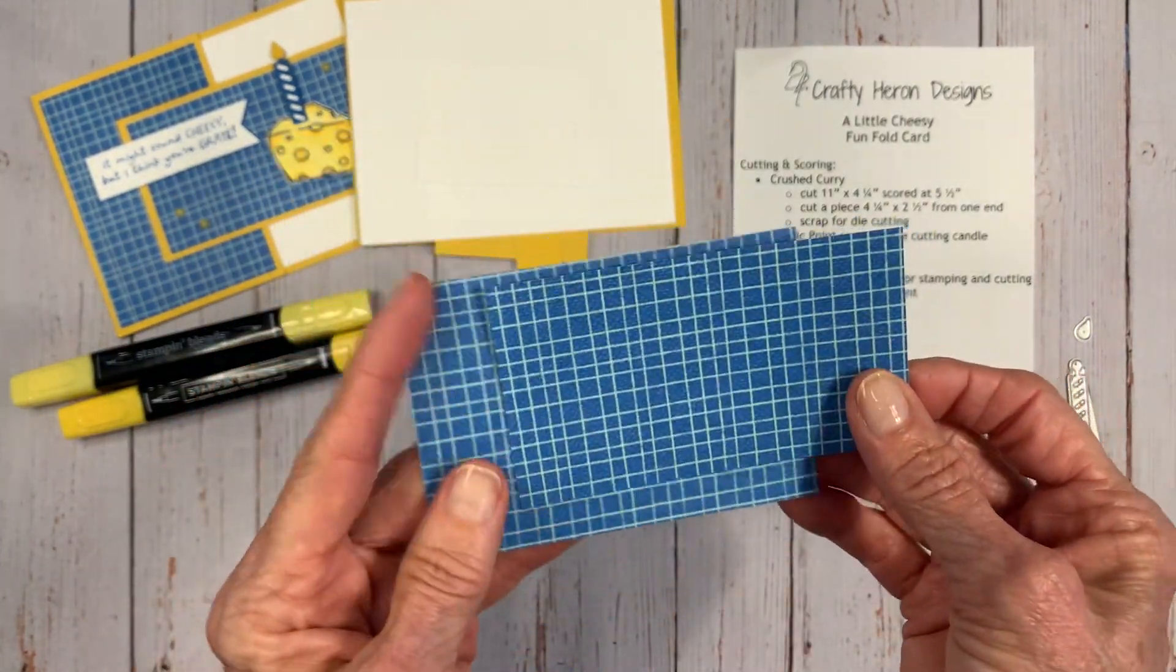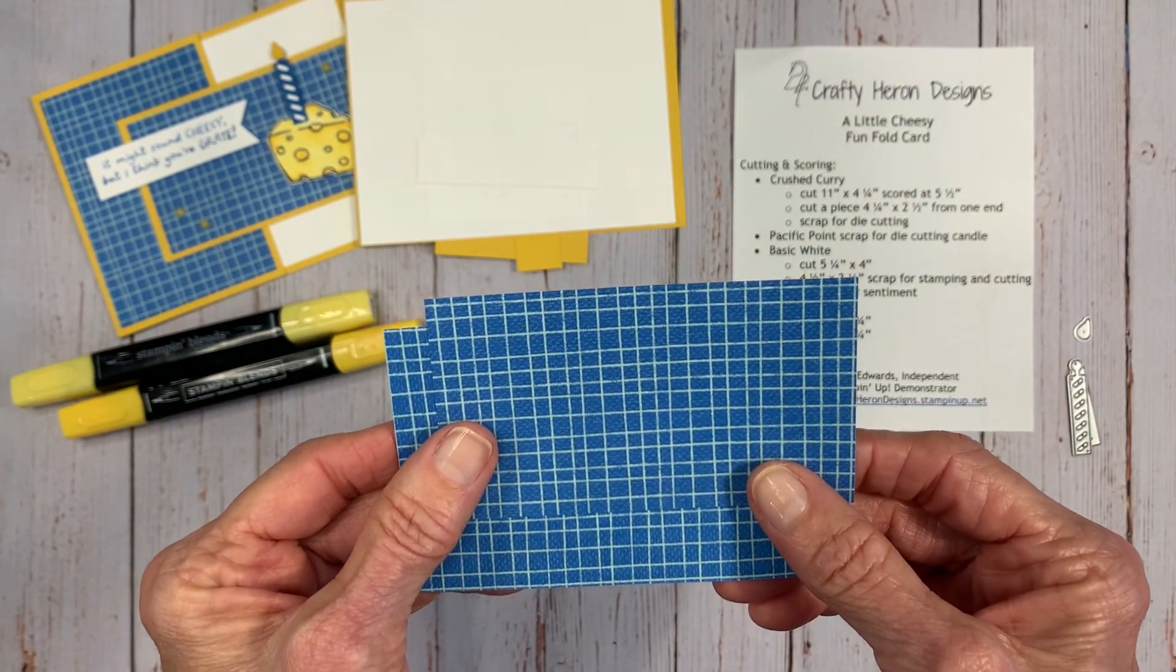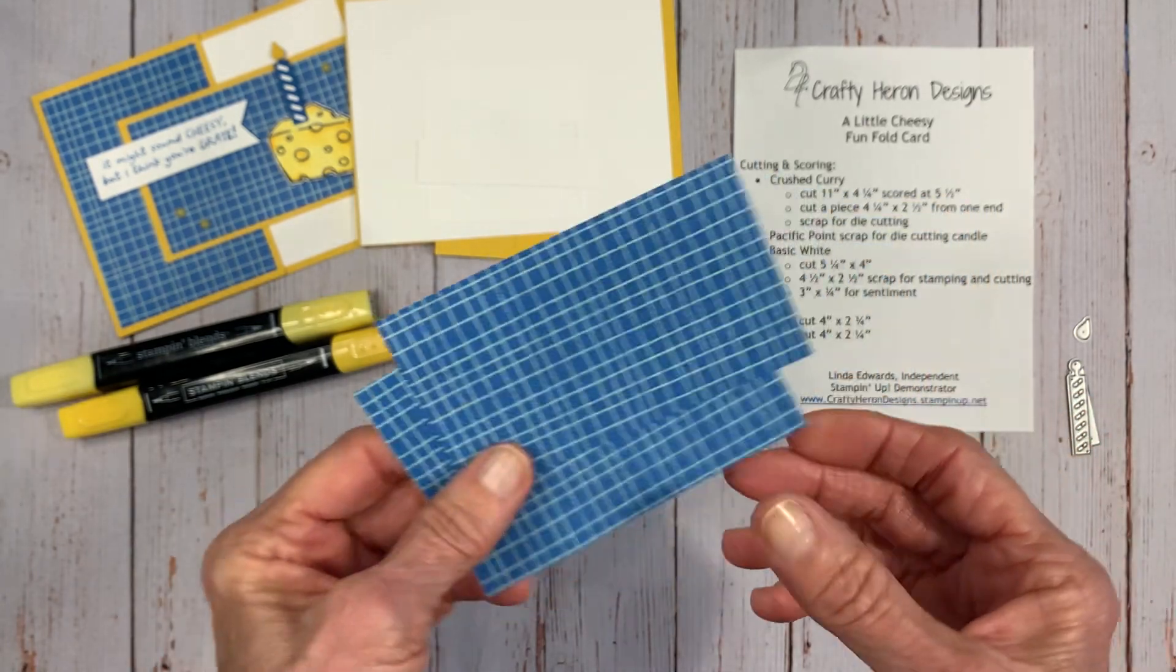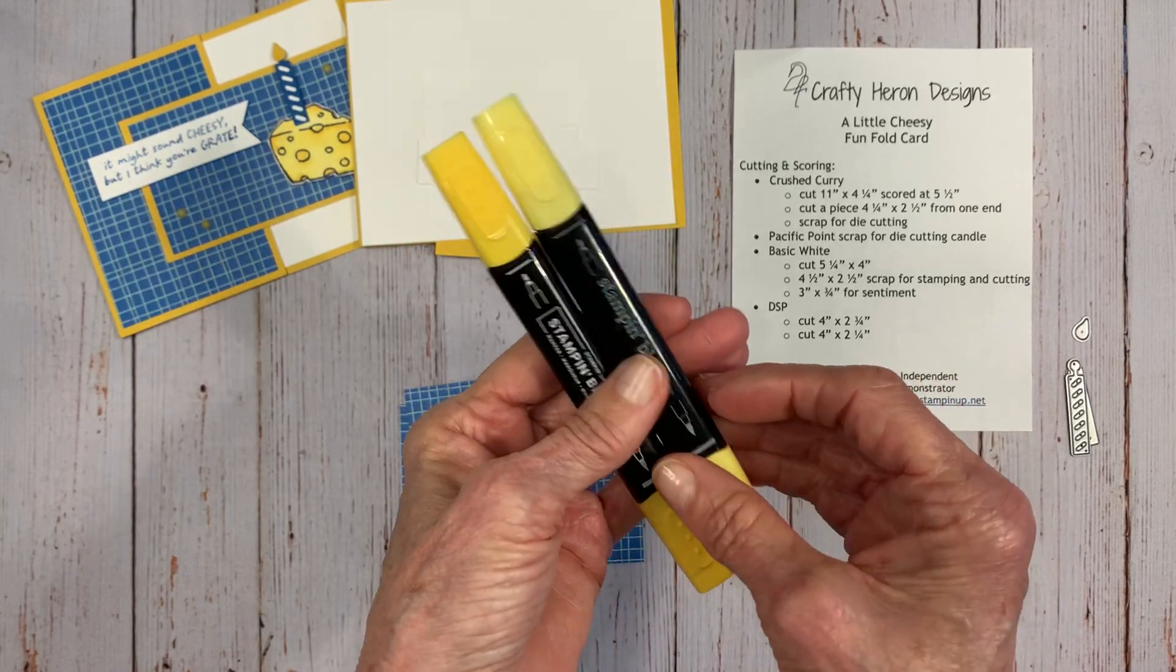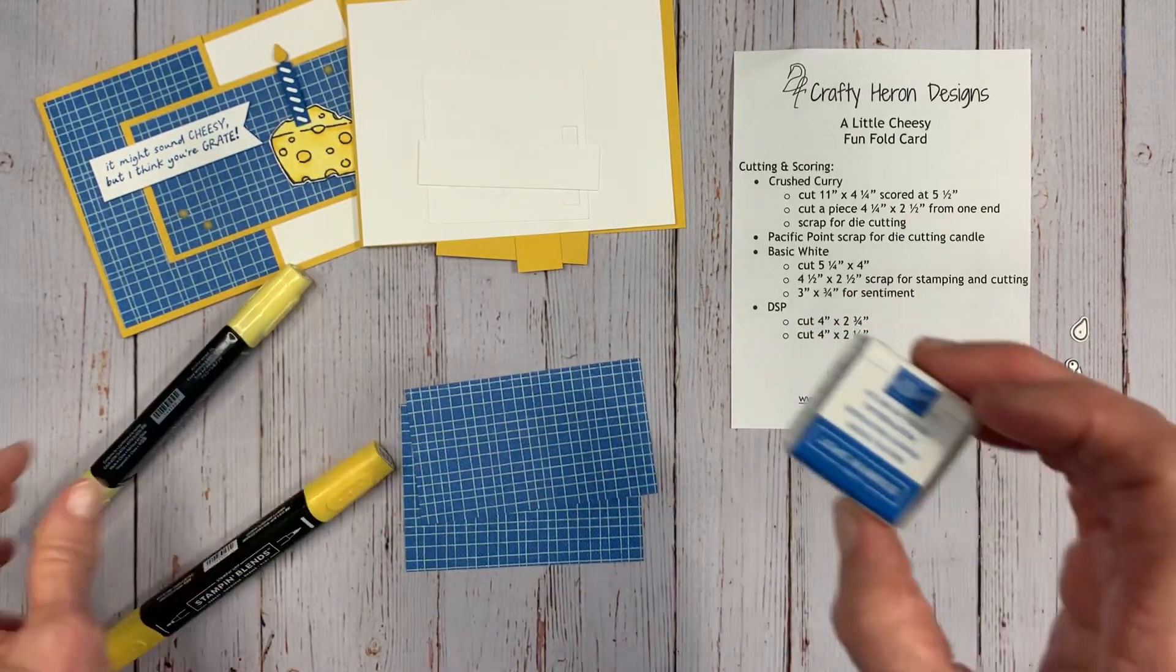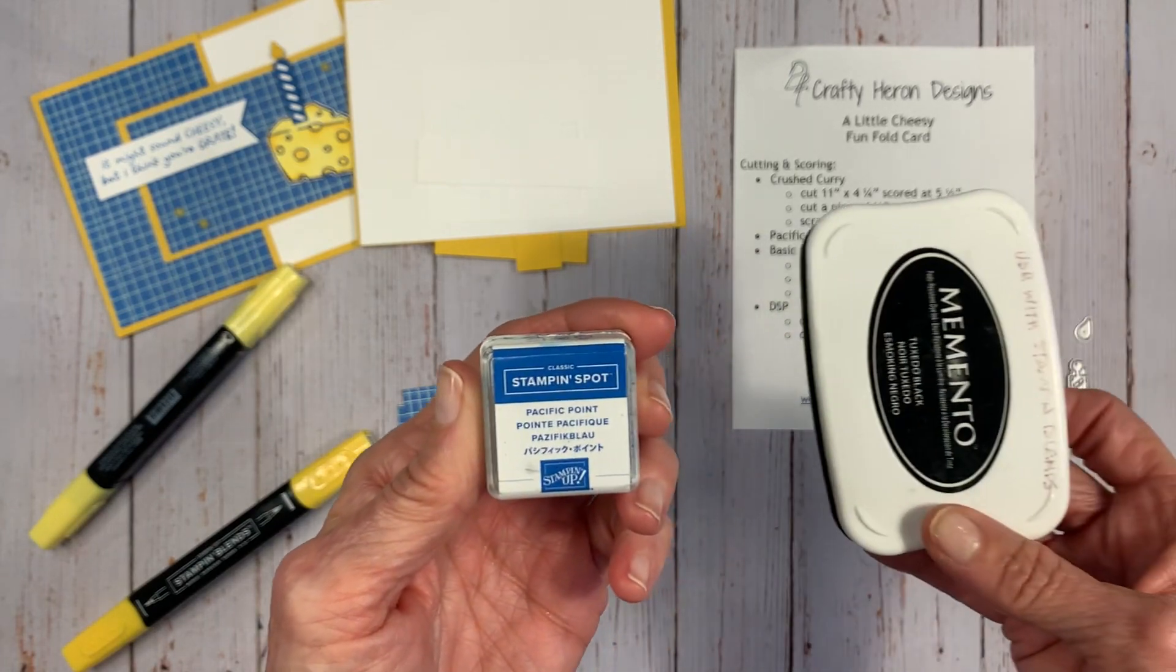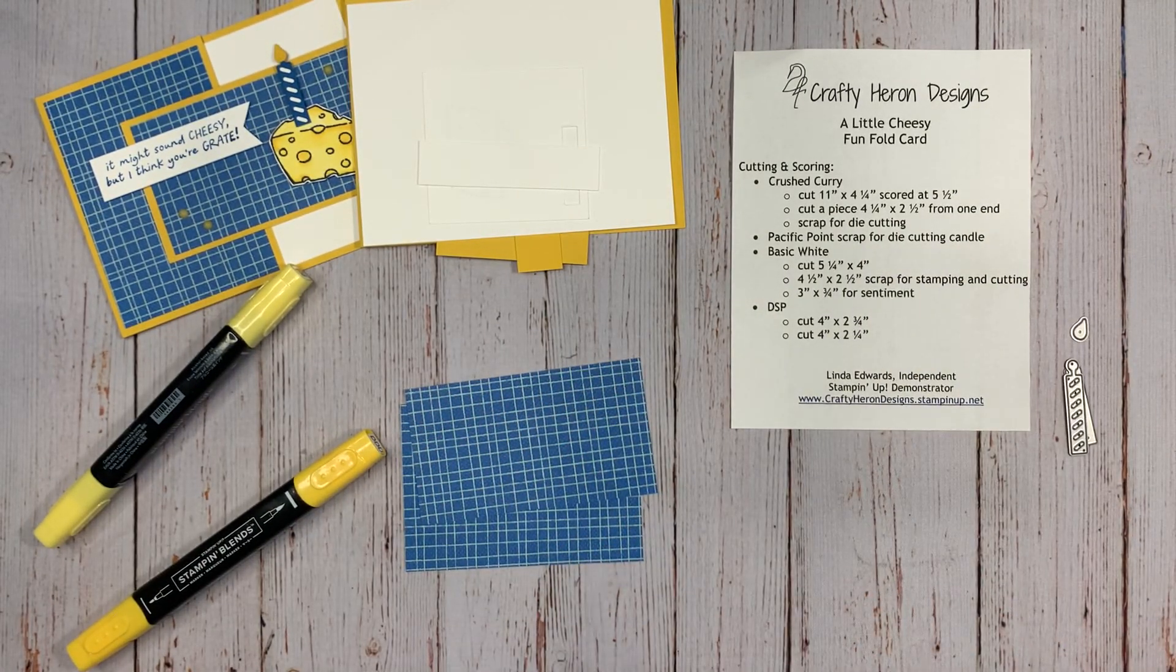And then you need another piece, just a scrap of the crushed curry that's going to be for the little candle flame. And then you'll need just a scrap of Pacific Point also for the candle. And then your basic white, the inside here, is cut at five and a quarter by four. Then you need a scrap for stamping and cutting. And then you're also going to need a three inches by three quarters of an inch for the sentiment. And then the designer series paper is cut four inches by two and three quarters and four inches by two and a quarter.